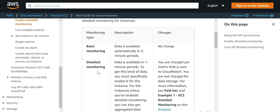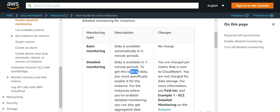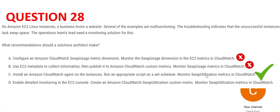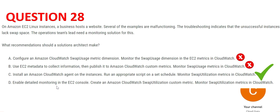Let's look at option D. The difference between detailed monitoring and basic monitoring: basic monitoring is enabled by default and provides data every five-minute period; detailed monitoring provides data every one-minute period. Detailed monitoring is a chargeable service while basic monitoring is free. In CloudWatch there are standard metrics and custom metrics — swap monitoring is a custom metric, and detailed monitoring will not send you this custom metric data. You have to use CloudWatch agents on the instances. So D is wrong and C is the final answer.